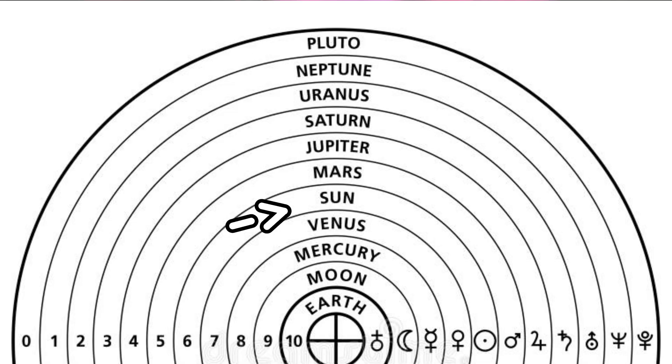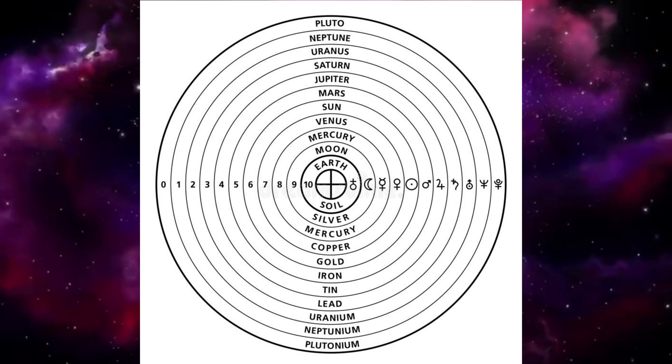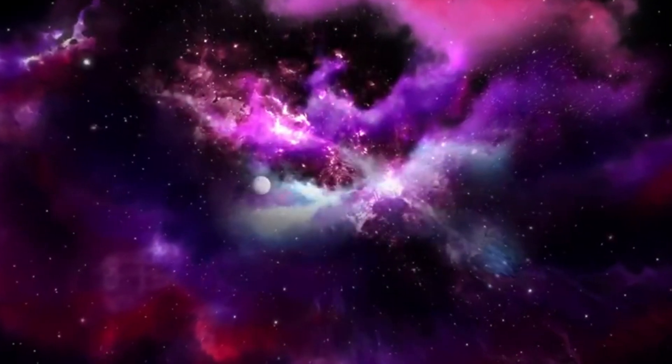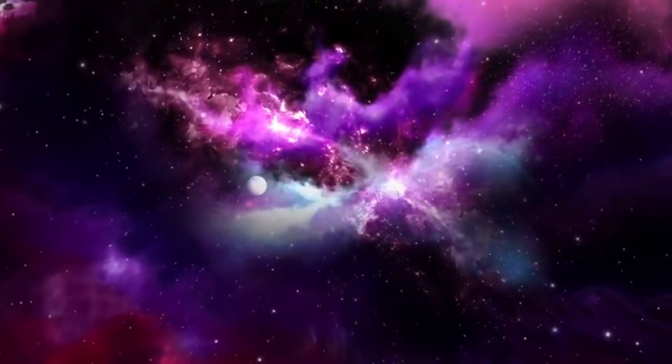This theory was that each planet revolves uniformly along a circular path which revolves around Earth, and Earth goes in an even bigger circle. It's odd, but without technology, I think it's pretty impressive.